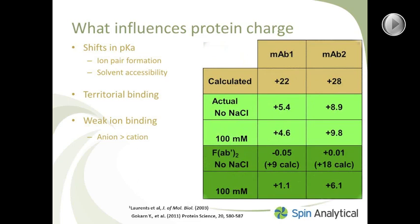Here's the bottom line with two monoclonal antibodies — work done by John Champagne in my laboratory. The charge calculated at pH 6 for monoclonal antibody 1 is 22 and for monoclonal antibody 2 is 28. When you actually measure the charge, antibody 1 is plus 5.4 and antibody 2 is around plus 9. As you go from no added salt to 100 millimolar salt, the Debye-Hückel-Henry charge changes slightly but not a great deal: for antibody 1 it goes down a little, for antibody 2 it goes up a little.